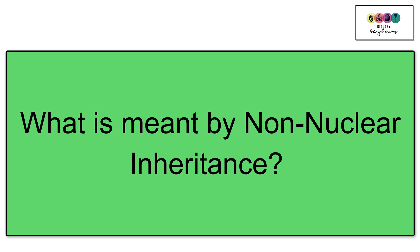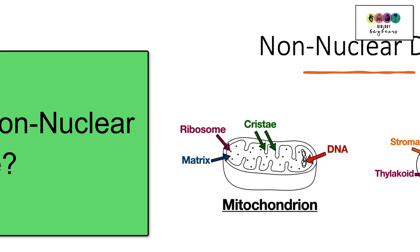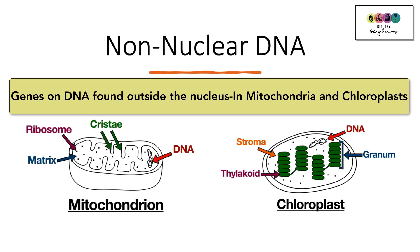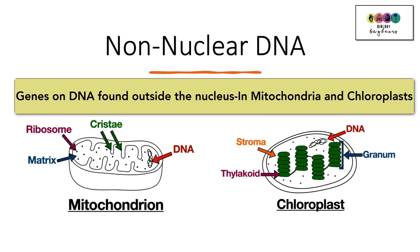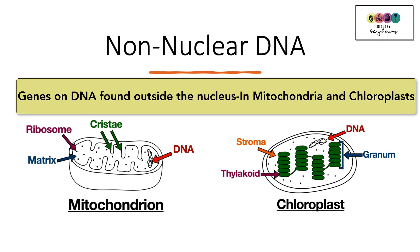What is meant by non-nuclear inheritance? It's basically the location of genes on DNA that is outside of the nucleus. So where else do you find DNA in a cell? You find it in the mitochondria and also in the chloroplast of plant cells.